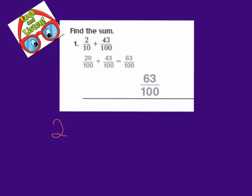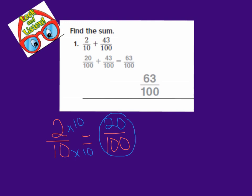Because if we have 2 tenths, we can see how many hundredths there are. We can say 10 times 10 is 100 and 2 times 10 is 20, so 20 hundredths is an equivalent fraction for 2 tenths. Now we can see that they have 20 hundredths and 43 hundredths, and they are able to add because the denominators are both 100. We just add our numerators: 20 plus 43 equals 63, and our denominator stays the same — hundredths. So our answer is 63 hundredths.